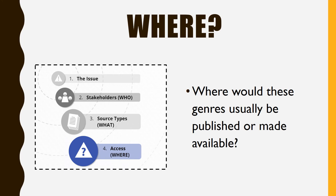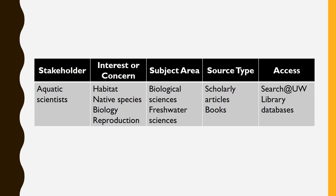Finally, let's brainstorm where we think we'll find these sources created by our stakeholders. I could find scholarly articles and books using Search at UWM on the library's homepage, or using one of the biological sciences or freshwater sciences tools from the library's databases by subject page.